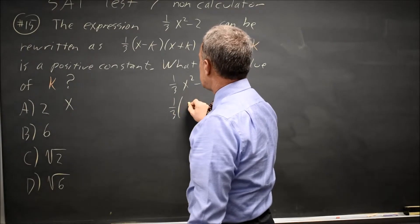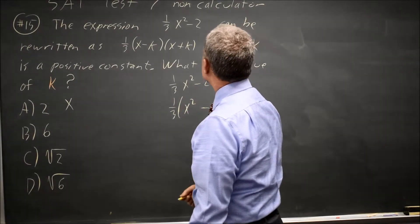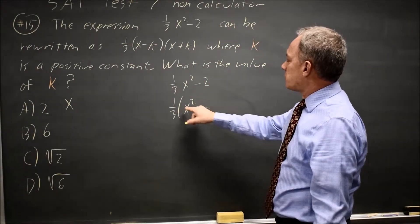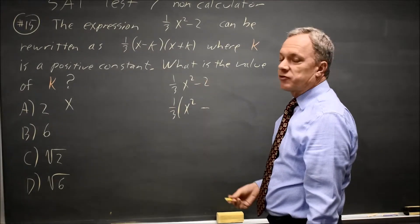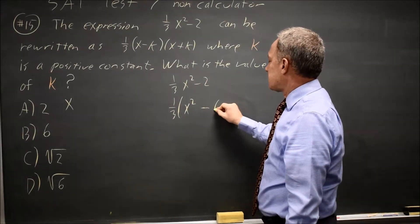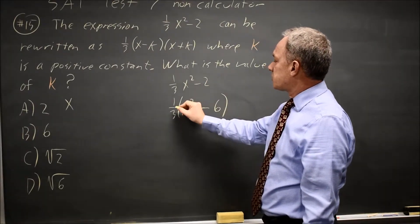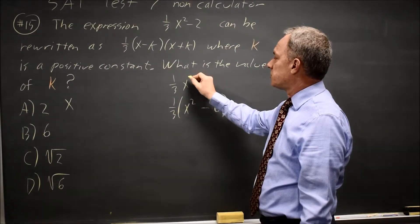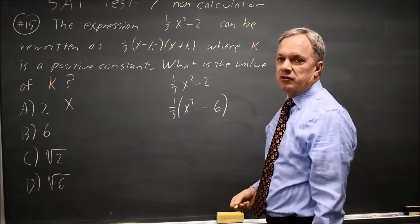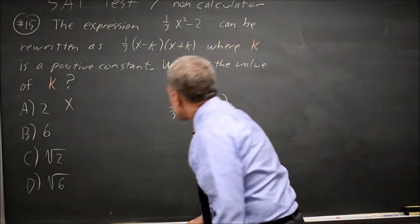I want 1/3(x² - ?). What do I multiply by 1/3 to get negative 2? That would be negative 6. And if I check distributing, 1/3 times x² is 1/3 x², 1/3 times negative 6 is negative 2. And now I can factor this.